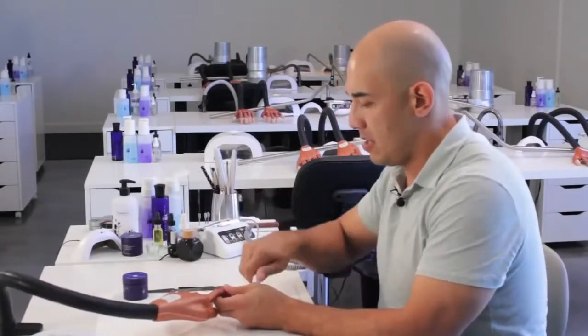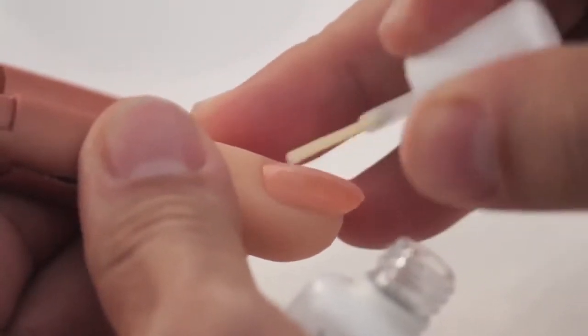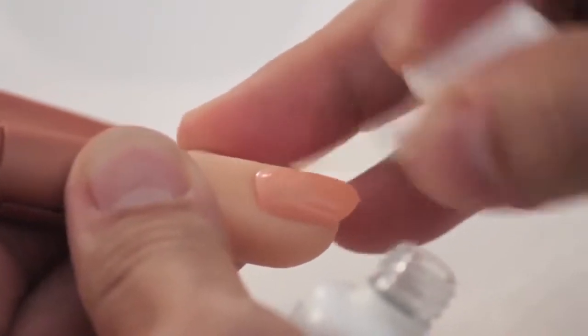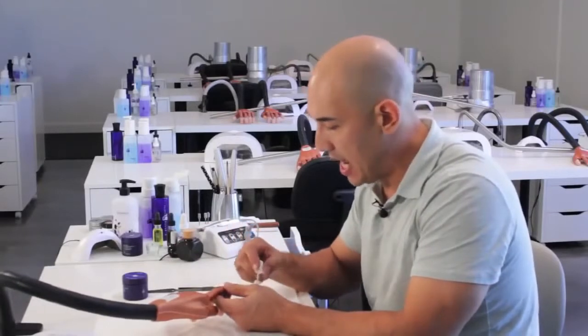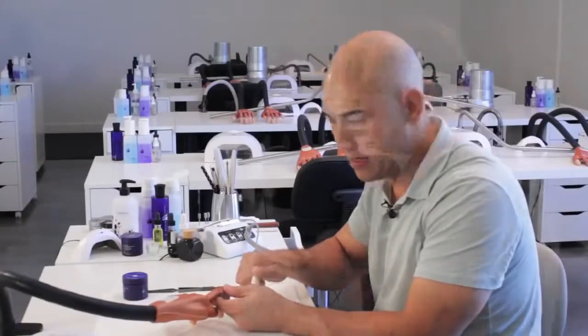Once we are done, we're going to take protein bond and apply it from cuticle to free edge, going through all ten nails. When you are done with the tenth nail, you're going to go back and do the same exact thing. Apply your second coat and set yourself up for success. We are now ready for application.